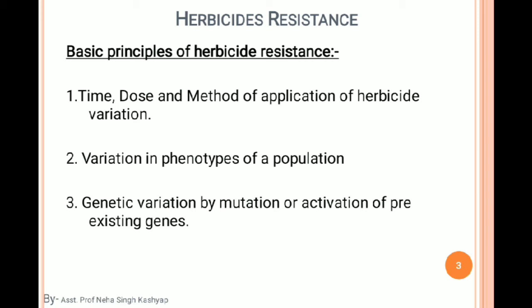Genetic variation occurs by mutation or activation of pre-existing genes. For example, sometimes crop plants like tomatoes, potatoes, or carrots show changes in their basic shape or structure — a mutation. When genes become imbalanced, the DNA is different, so the structure of the crop is different. This creates variety in the population.